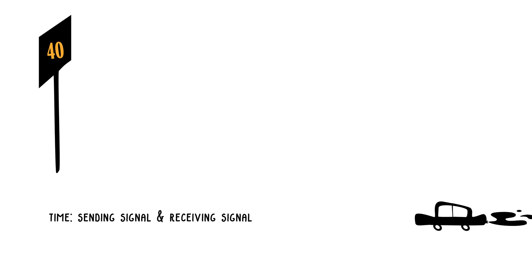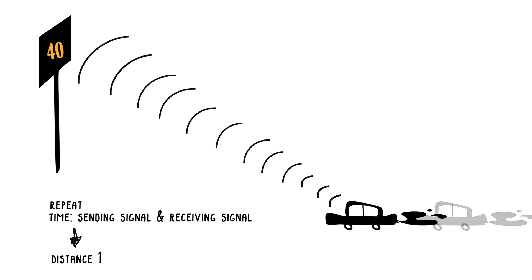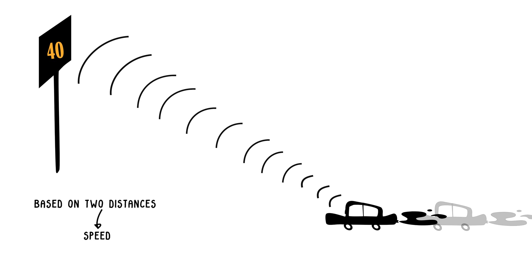This time difference is converted into distance. The same process is repeated again, and the radar speed sign calculates a new distance. The new distance cannot be the same as the first because the vehicle has moved and is now closer to the sign. Speed is then calculated based on these two different distances.